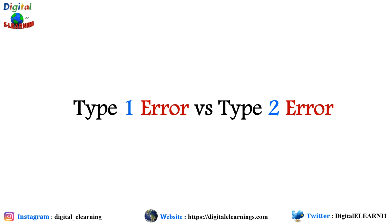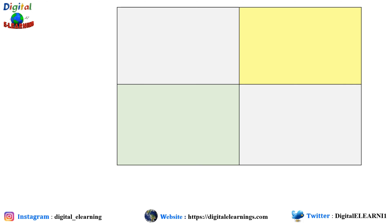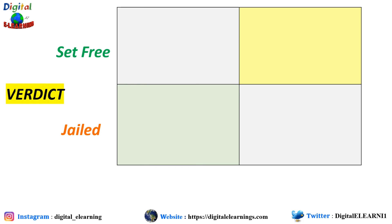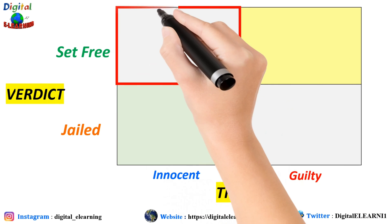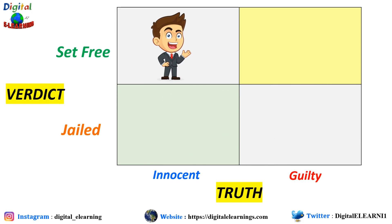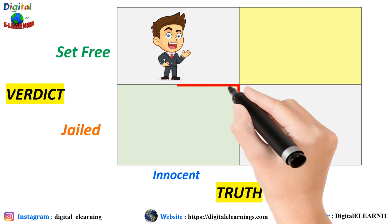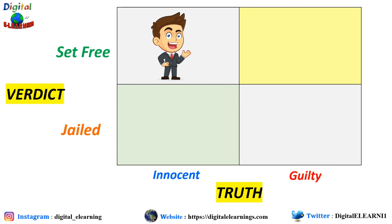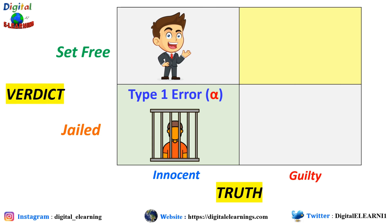To understand it a little bit more, let's look at this graphic. On the y-axis we have the verdict in the form of whether the person should be jailed or set free. On the x-axis we have the truth in the form of whether he is innocent or guilty. If someone who is innocent is set free, that is the correct decision. But if someone who is innocent is jailed, that is not the correct decision — that is the type 1 error, or alpha error.